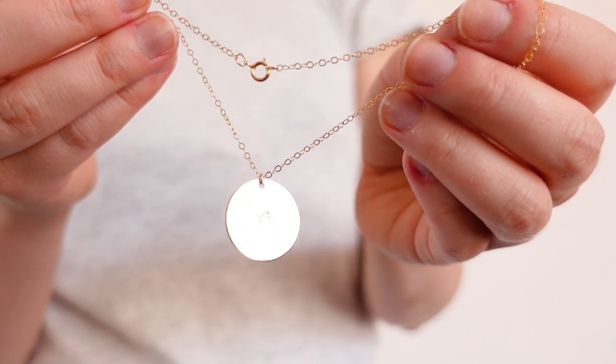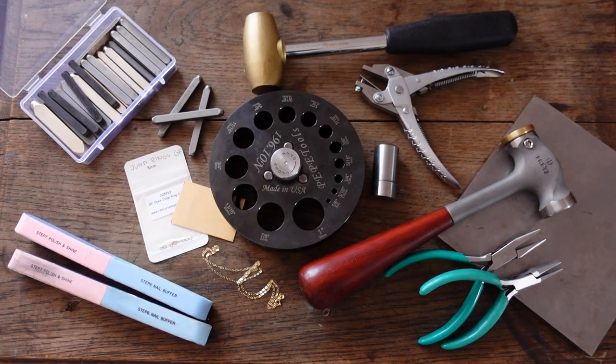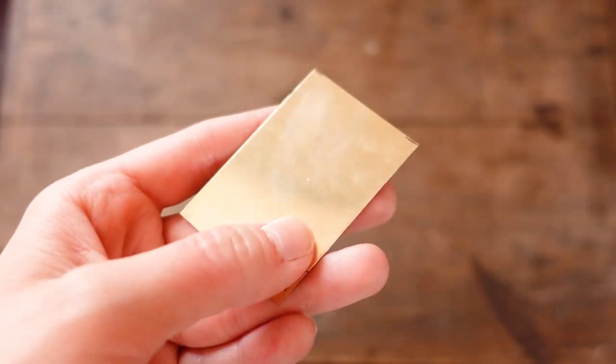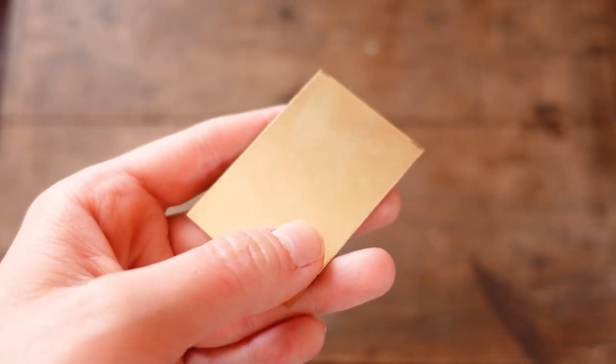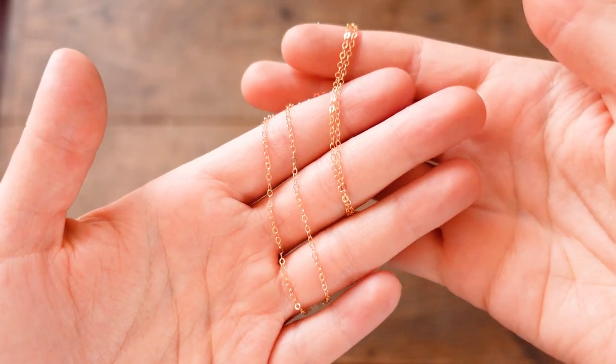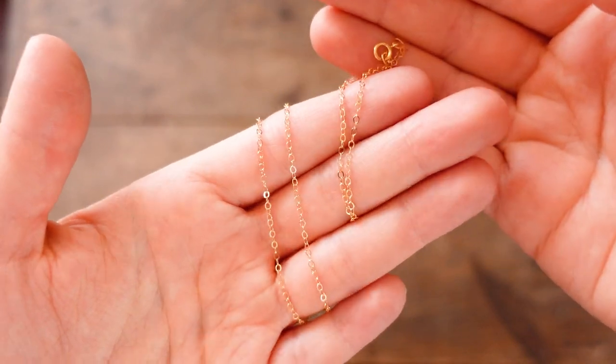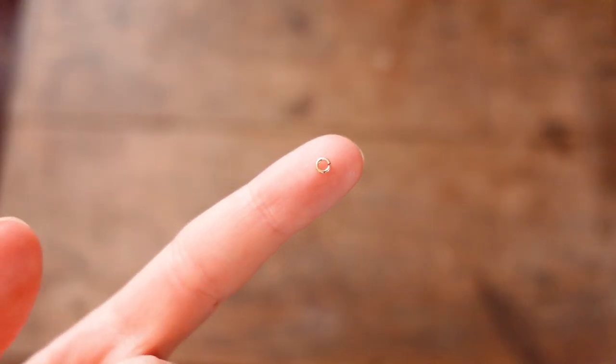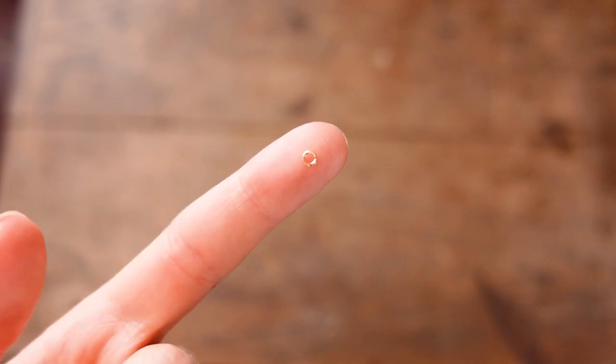First project is the simple stamped disc necklace. For this necklace I will be using 0.5 mm gold filled sheet, 16 inches gold filled chain, finished one and a gold filled jump ring to attach the disc onto the chain.